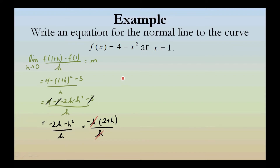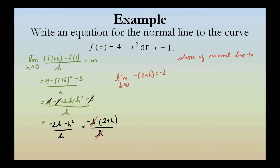Our result is the limit as h approaches 0 of the negative quantity 2 plus h, which equals negative 2. So the slope of the normal line to the curve of the function f of x equals 4 minus x squared at x equals 1 is 1 half — the opposite reciprocal of negative 2.